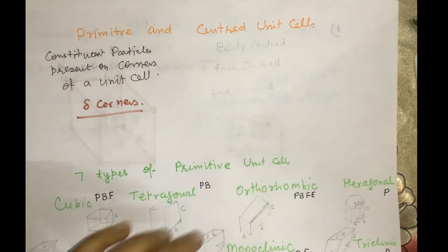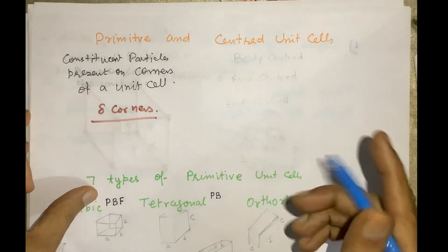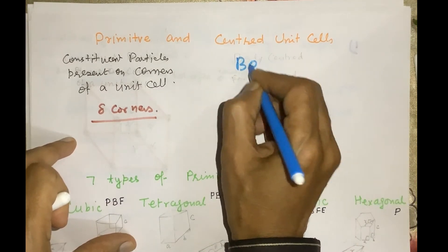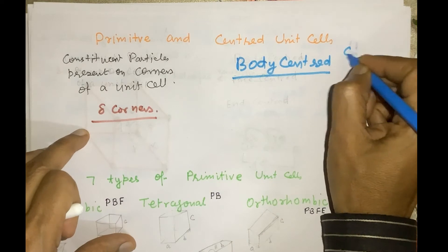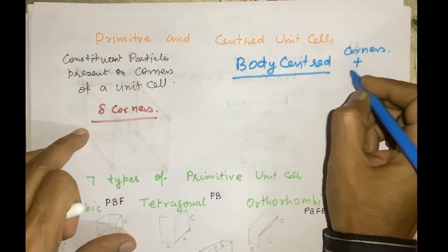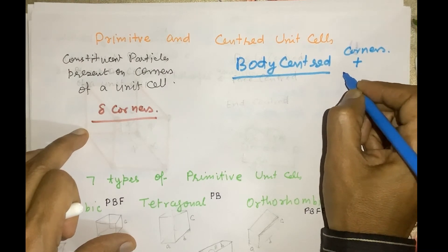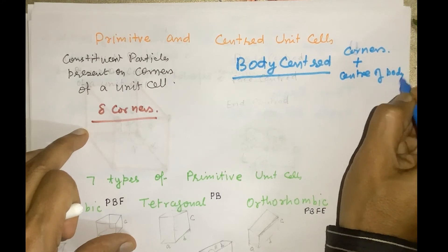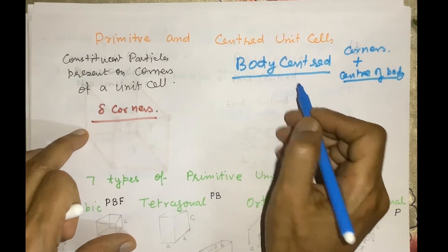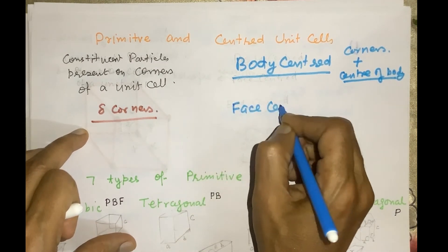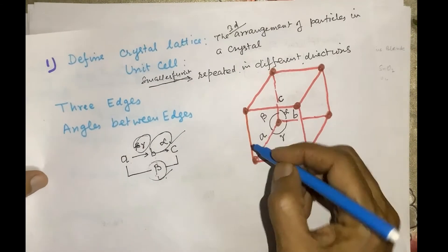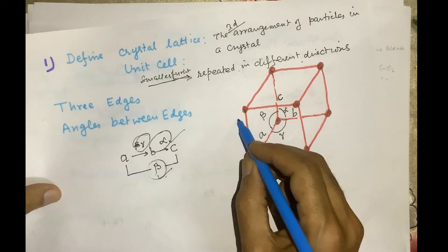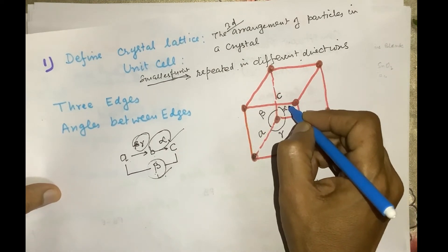Now, centered unit cells. One type is body-centered. In body-centered unit cells, the constituent particles are present at the corners, plus one constituent particle is present at the center of the body. Eight constituent particles are at the corners and one is at the center of the body — this is called body-centered.